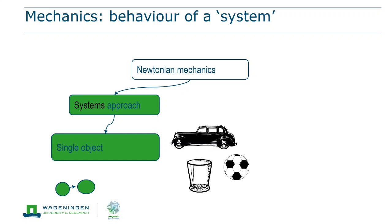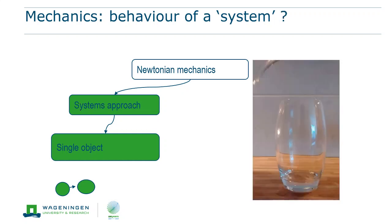Favorite examples of objects used in physics textbooks are things like cars and footballs. But now, how useful is that if you want to study the water that is poured into a glass?